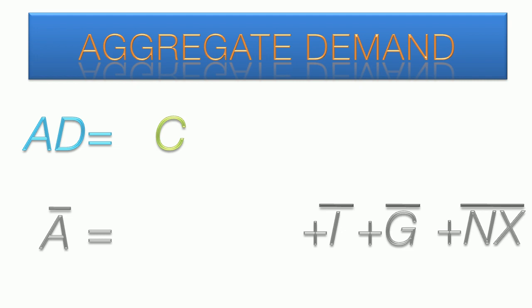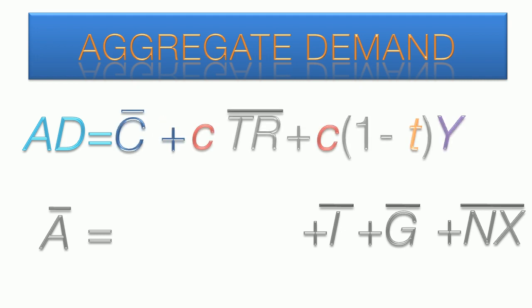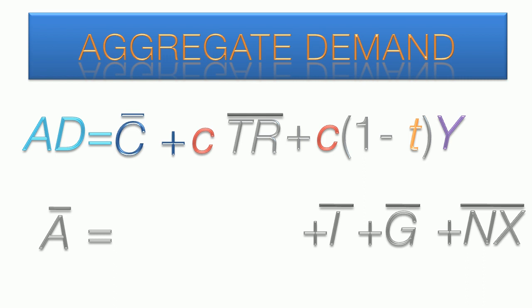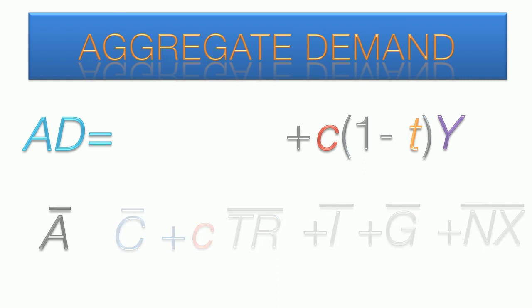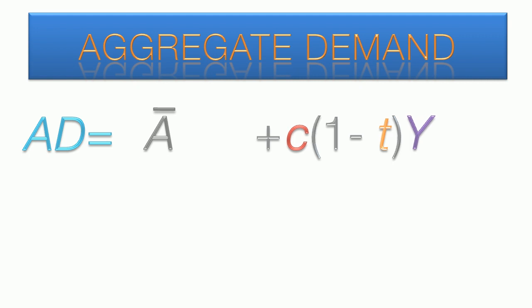When we substitute the consumption function in for C, we see that there are some exogenous variables such as autonomous consumption and transfer payments. These can be grouped down below with the other external factors. We can bring the two groups together with the simplified A-bar to represent all the exogenous factors, and c times 1 minus t times Y, representing the endogenous factors.